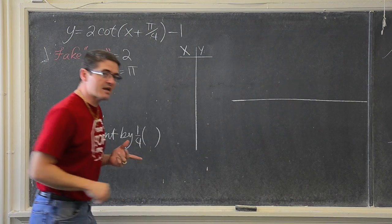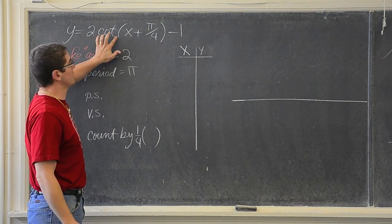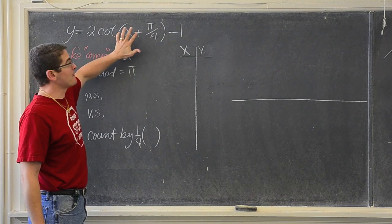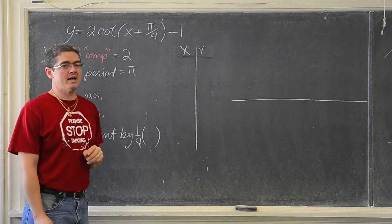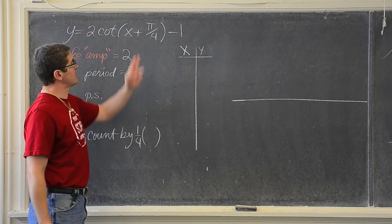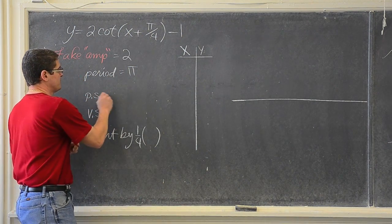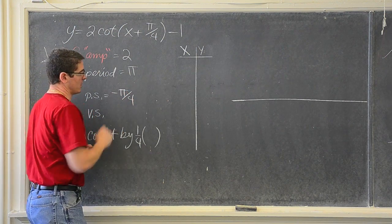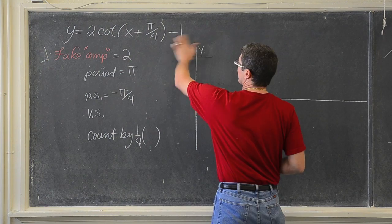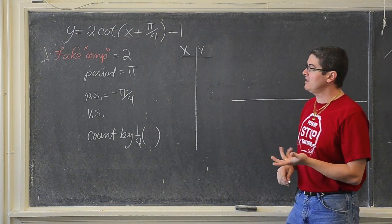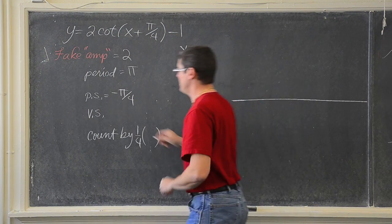The phase shift is c over b. The standard form of a trig function is a·trig(bx - c) + d, so the standard form has a negative sign. Since we see a plus sign in the equation, c must be negative. So the phase shift is going to be negative π/4. The vertical shift is the constant at the end of the equation outside the trig function, so that is negative 1.